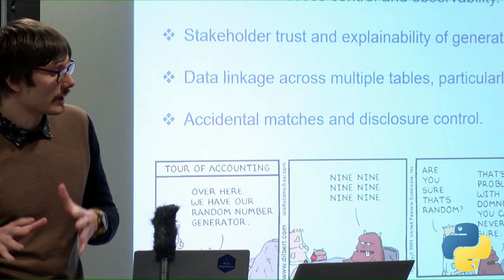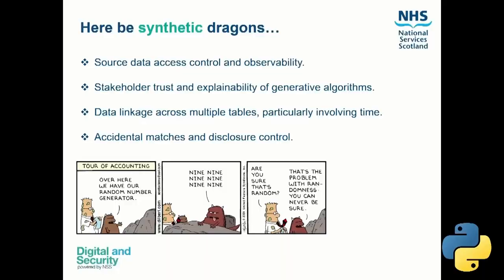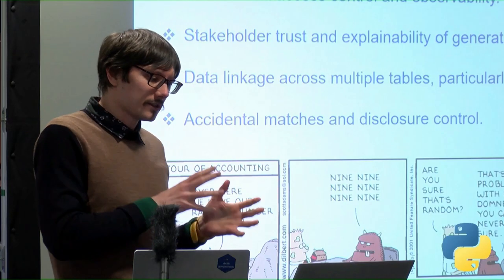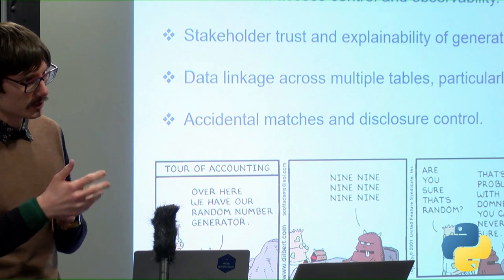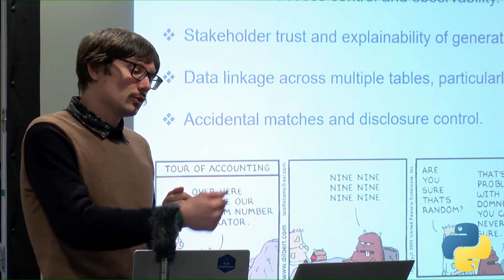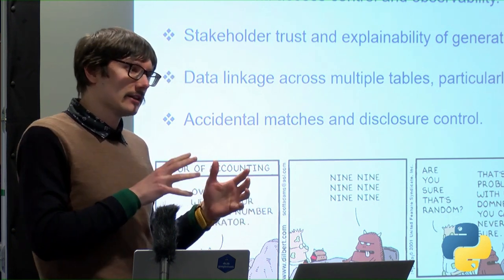There are of course synthetic dragons out there. Source control and observability — making sure you know all the steps that your crown jewel of confidential data takes all the way to the synthetic stage. Stakeholder trust and explainability of the algorithms you apply to generate the synthetic data also matters, and this has to be done for two audiences: a technical audience, and an information governance or policy audience where you need to explain in plain English what you've done to ensure confidentiality is protected.